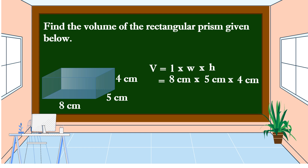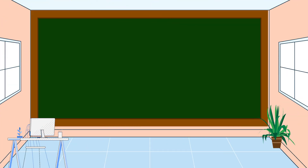Let's find the product. 8 centimeters times 5 centimeters is equal to 40 square centimeters. Times 4 centimeters, the volume is equal to 160 cubic centimeters. This is the volume of this rectangular prism. I hope that you understand our lesson for today, and thank you for watching.